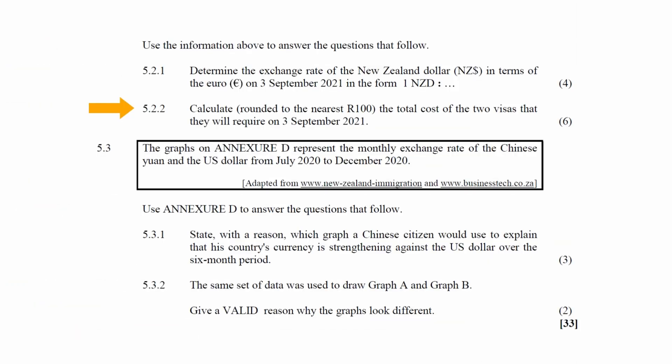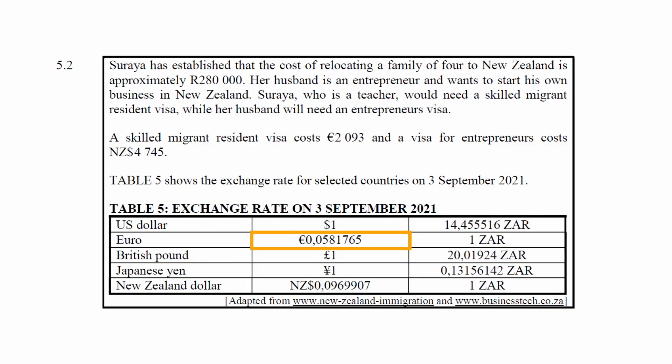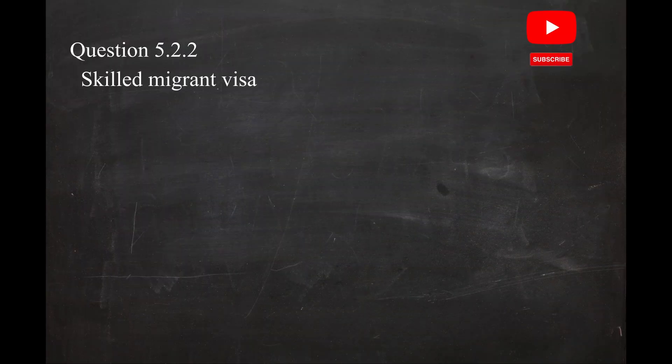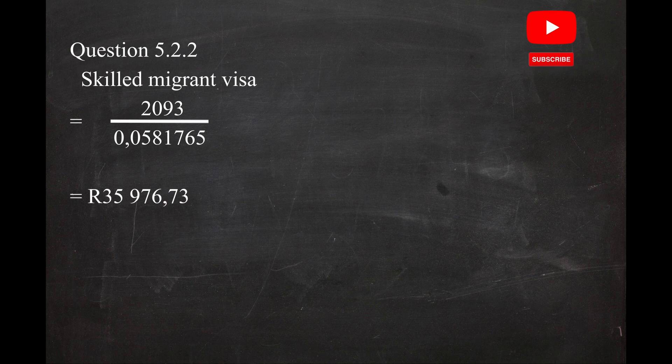In question 5.2.2, you have to calculate to the nearest 100 rand the total cost of the two visas on the 3rd of September 2021. From the table, 1 South African rand equals 0.0581765 euros, so the skilled migrant visa costs 2,093 euros divided by 0.0581765, giving a cost of 35,976 rand 73 cents.